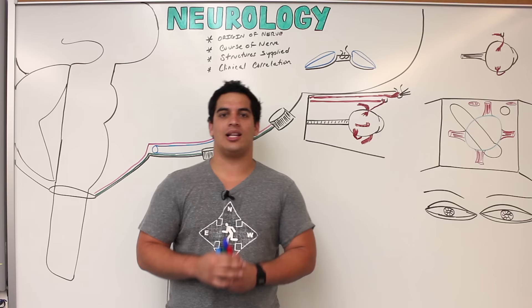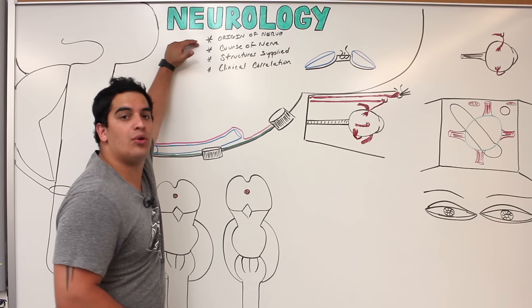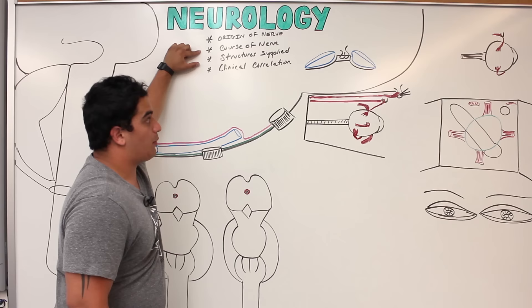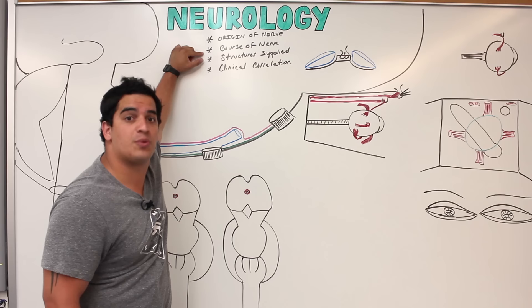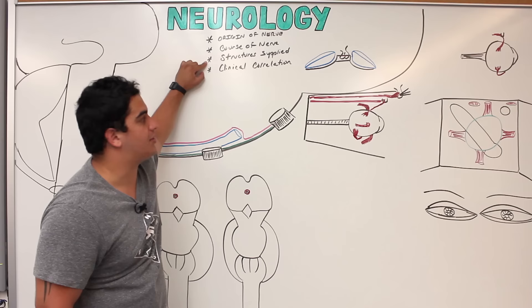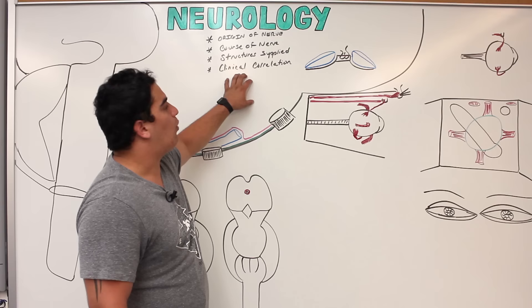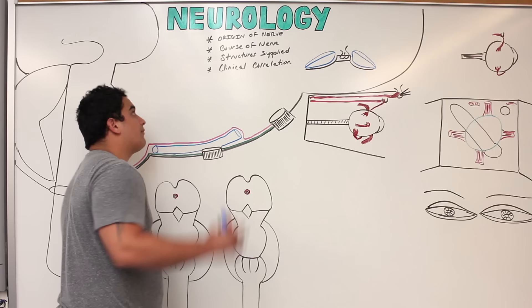Alright Ninja Nerds, in this video we're going to talk about the third cranial nerve or the oculomotor nerve. We're going to discuss the origin of the nerve, where the nucleus is found, what structures surround it within the brain stem, the course of the nerve including what structures, vessels, dural sinuses, and holes within the skull it passes by, the structures it supplies and their functions, and then finish with some clinical correlation — specifically Weber and Benedict syndrome, and a few other situations.